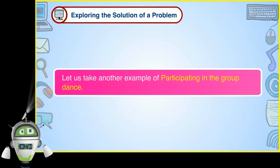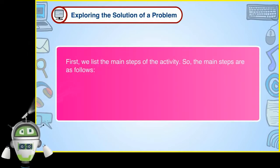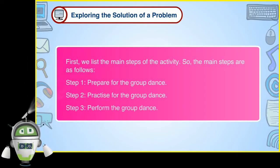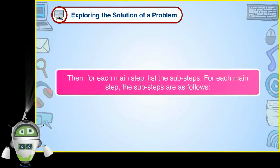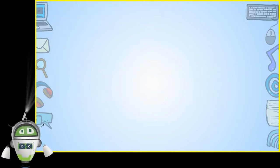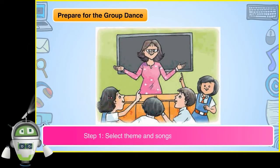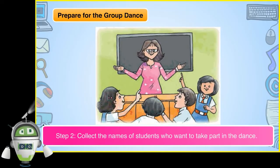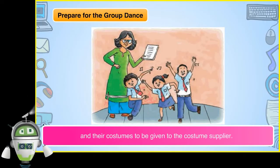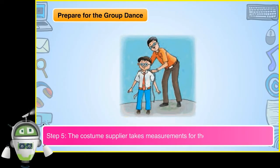Let us take another example of participating in the group dance. The main steps are: Step 1 — Prepare for the group dance. Step 2 — Practice for the group dance. Step 3 — Perform the group dance. For the preparation sub-steps: select theme and songs, collect names of students who want to participate, take a trial of all students, prepare a list with names and costumes for the costume supplier, and the costume supplier takes measurements for the costumes.